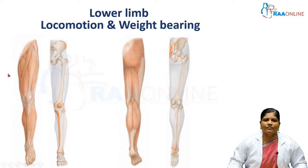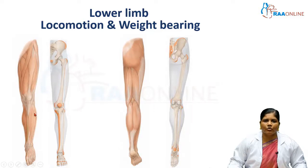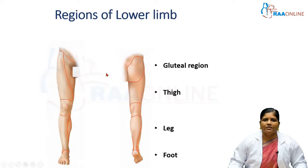The lower limb extends below from the trunk, and the junction of the trunk and the lower limb is called the groin area. This is the anterior view of the lower limb and this is the posterior view. The main function of the lower limb is locomotion — to help us move from one place to another — as well as weight bearing.